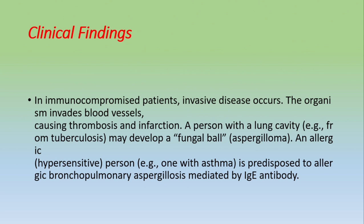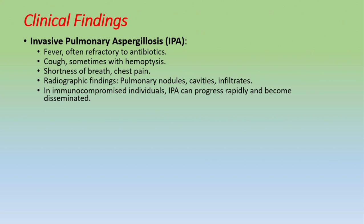Clinical findings: In immunocompromised patients, invasive disease occurs — the organism invades blood vessels, causing thrombosis and infarction. A person with a lung cavity may develop a fungal ball (aspergilloma). Allergic/hypersensitivity individuals are predisposed to allergic bronchopulmonary aspergillosis, mediated by IgE antibodies. First disease: Invasive Pulmonary Aspergillosis (IPA) — symptoms include fever unresponsive to antibiotics, cough sometimes with hemoptysis, and shortness of breath and chest pain. Radiographic findings include pulmonary nodules, cavities, and infiltrates. In immunocompromised patients, IPA can progress rapidly and become disseminated.